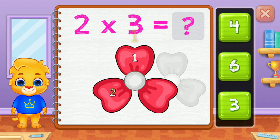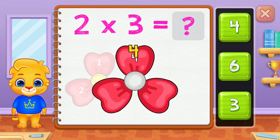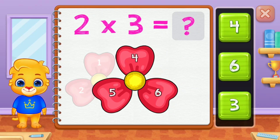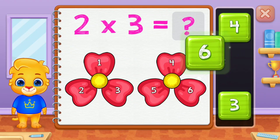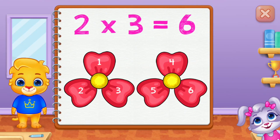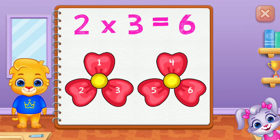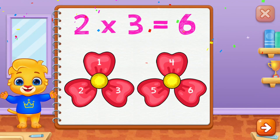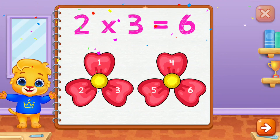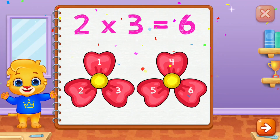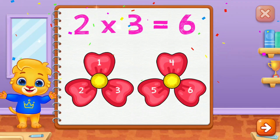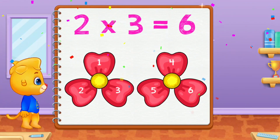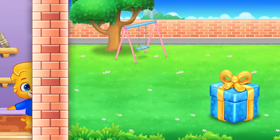One, two, three. Four, five, six. Six! Two groups of three equals six.